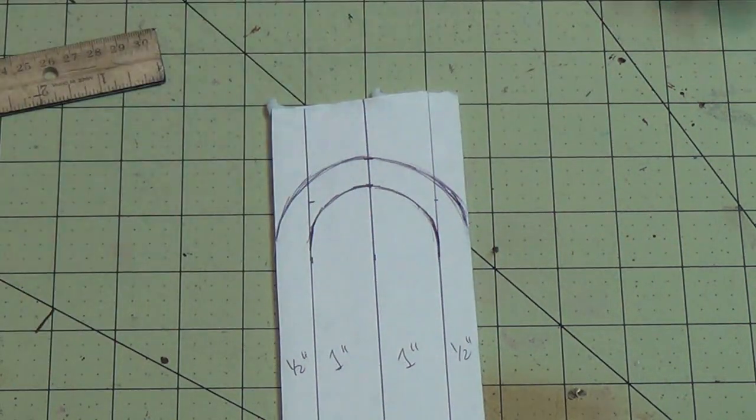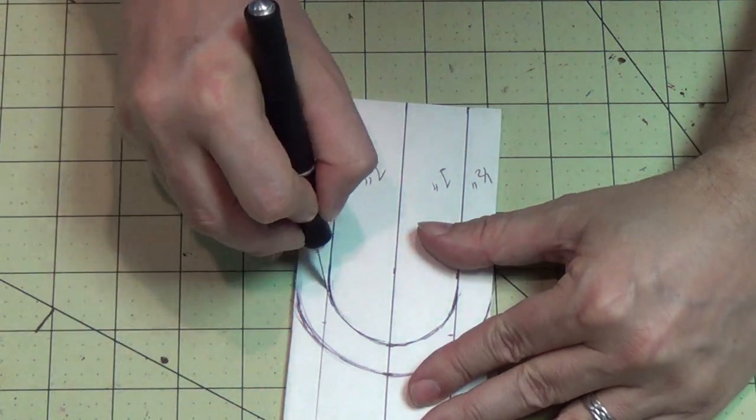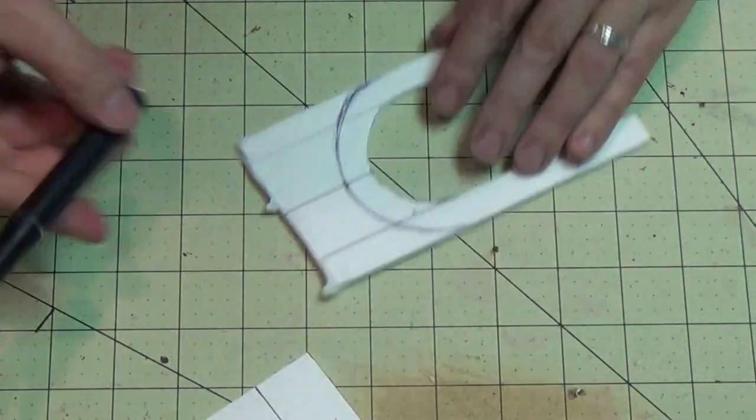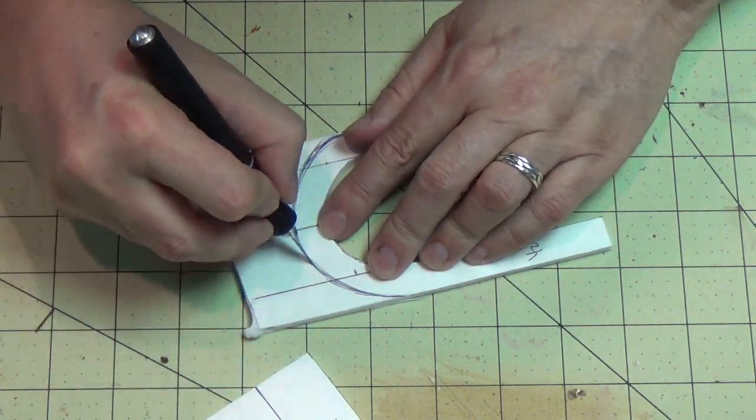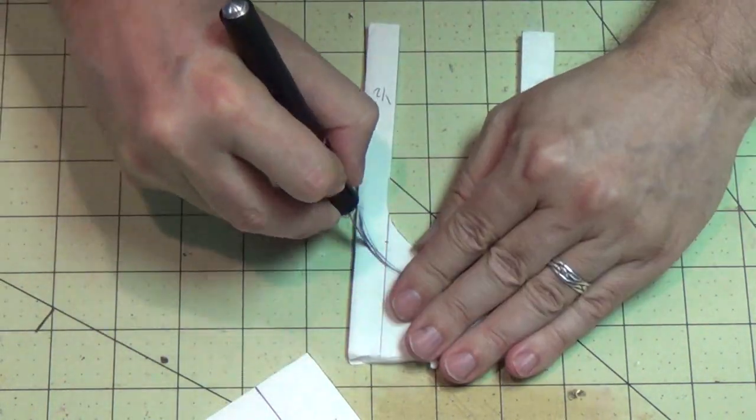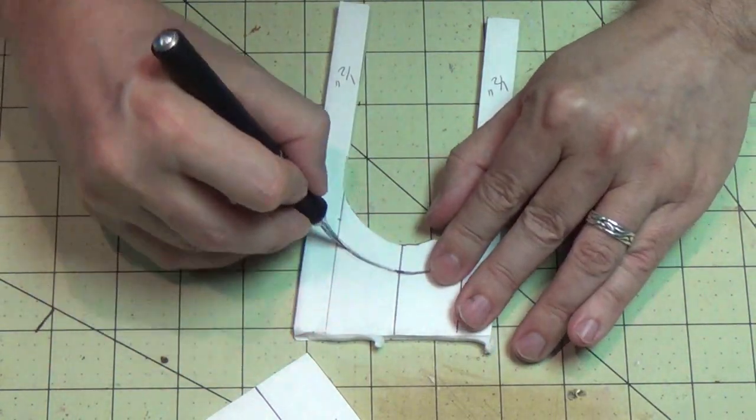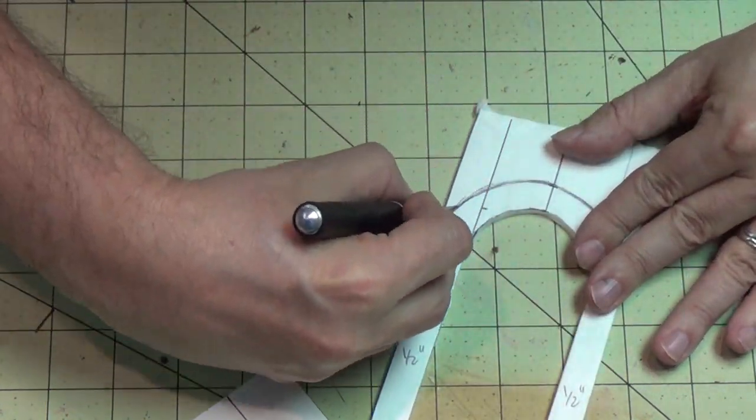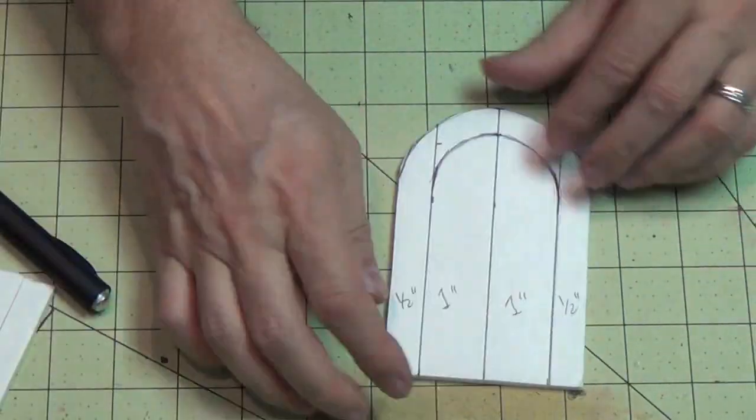And then just kind of fill that in. Now I'm ready to cut. So I'll cut the door out. Easy, just use an X-Acto knife and cut the top frame of the door off.